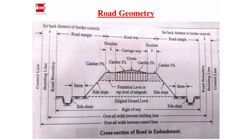Now let's look at the overall width between the control lines and the overall width between the building lines. There are two points between building lines relating to the right-of-way. When there is road construction above the right-of-way, there will be a need to acquire land, and that land acquisition gives you the right-of-way.